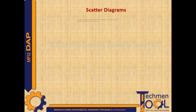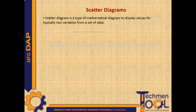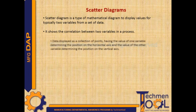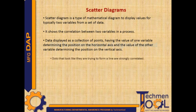Scatter Diagrams – a scatter diagram is a type of mathematical diagram used to display values for typically two variables from a set of data. It shows the correlation between two variables in a process. Data is displayed as a collection of points, with the value of one variable determining the position on the horizontal axis and the value of the other variable determining the position on the vertical axis.